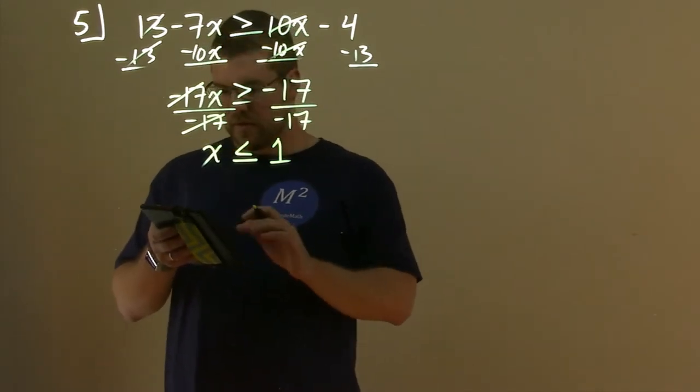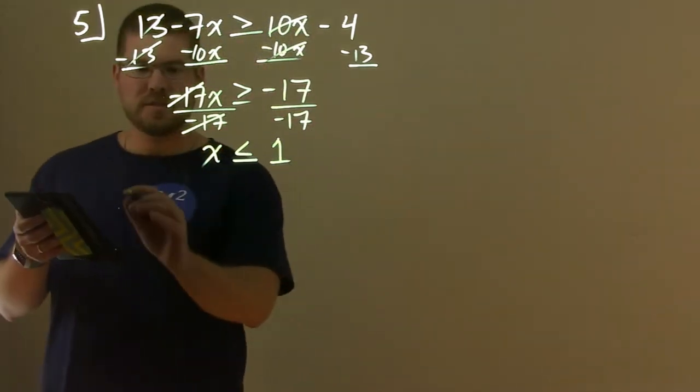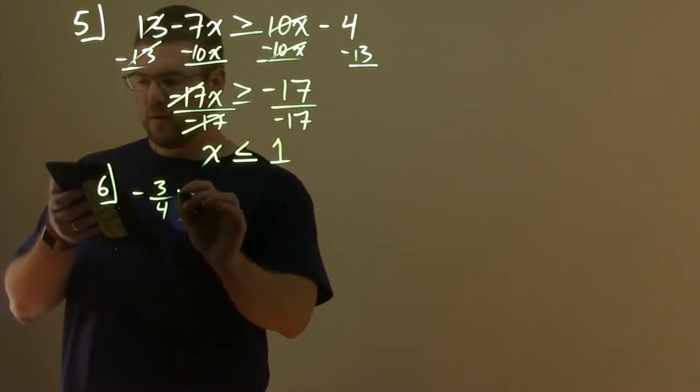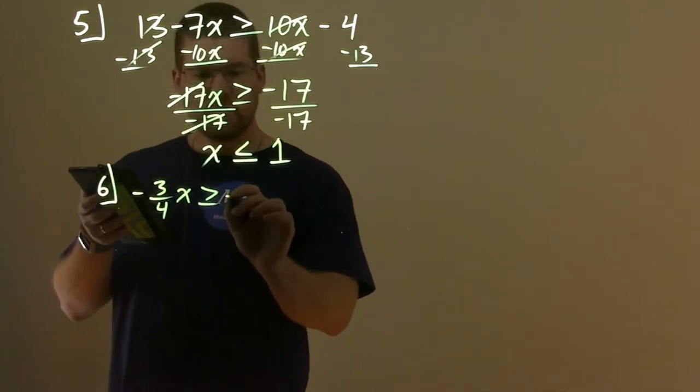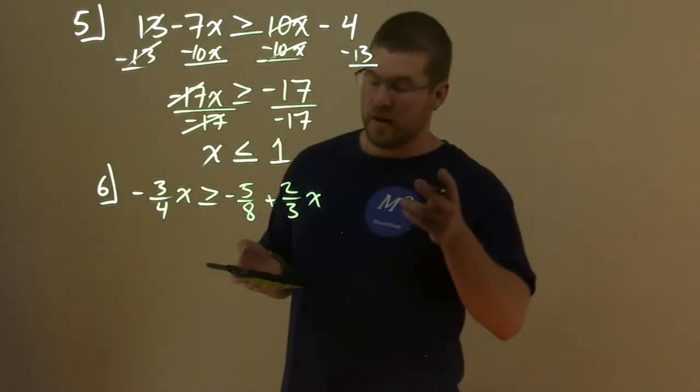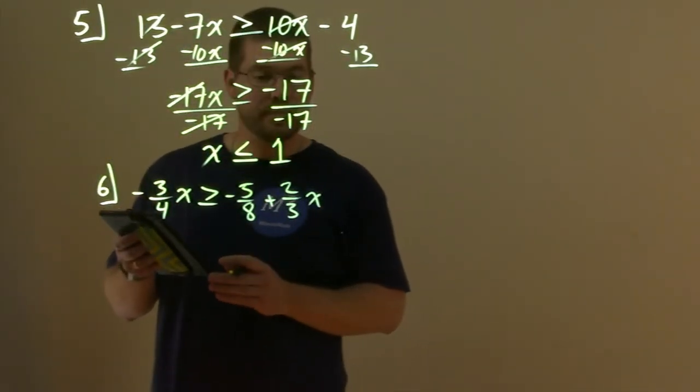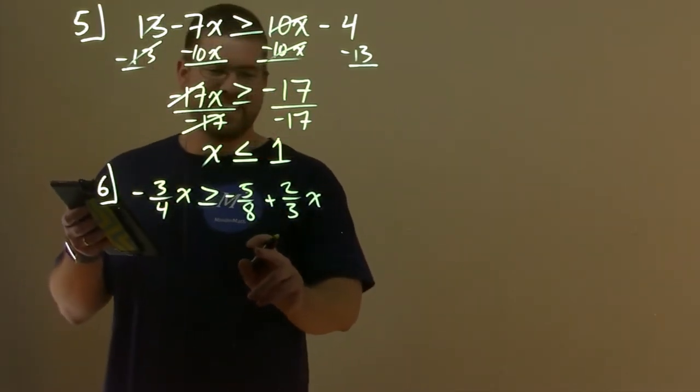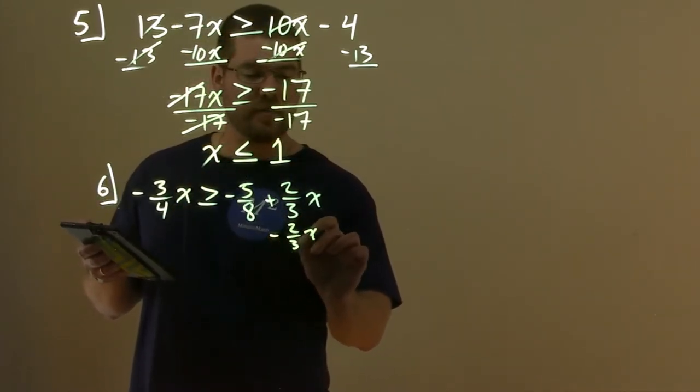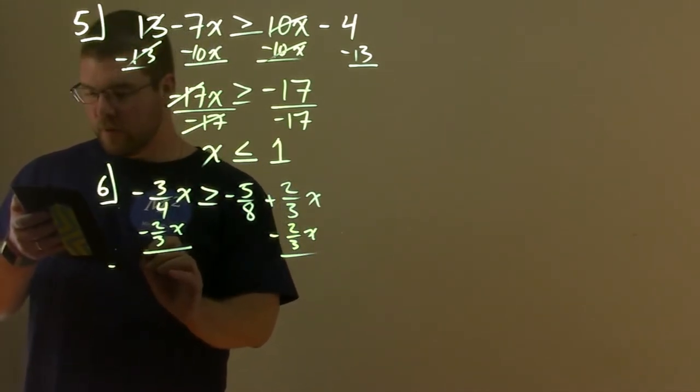Not too bad. Let's go deal with another one here. So, this one here is going to have some fractions in it, number 6. We want to solve this one: negative 3 fourths x is greater than or equal to negative 5 eighths plus 2 thirds x. Well, fractions are our friends, and in my case, my only friend. Bad teacher pun here. My students never left when I did that one. Anyway, I hope you got a kick out of it. So, what we're going to do is bring our x's together. We're going to subtract a 2 thirds x to both sides. And so, we have minus 3 fourths x minus 2 thirds x.